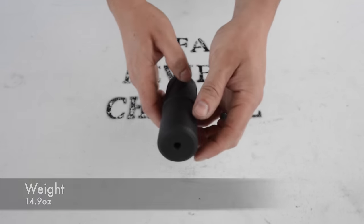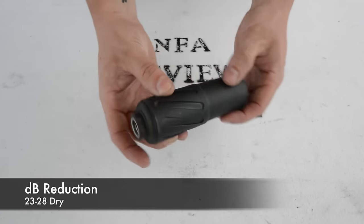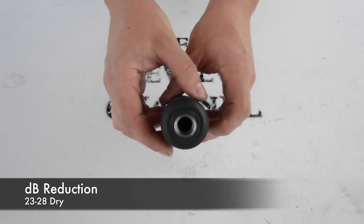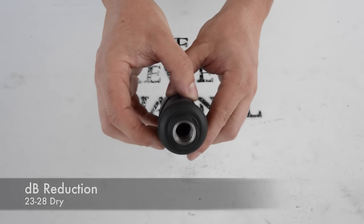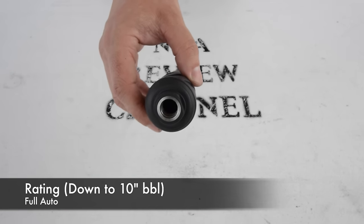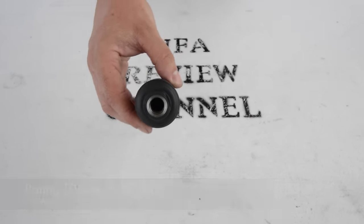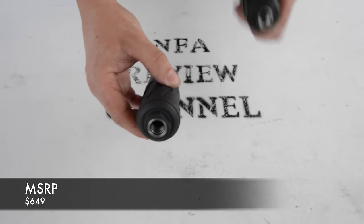It weighs in at 14.9 ounces and has a factory tested 23 to 28 decibel reduction dry. You can shoot this suppressor wet. The rating is full auto rated down to a 10 inch barrel and it retails at only $649.